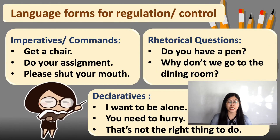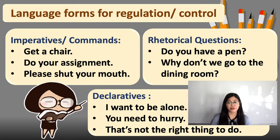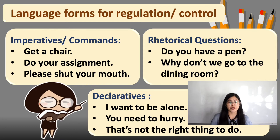Here are some language forms used for regulation or control. Regulating or controlling behavior can be done in three ways. The first is imperatives or commands — you are commanding or requesting. Examples include: 'Get a chair,' 'Do your assignment,' and 'Please shut your mouth.' Those are examples of imperatives or commands.